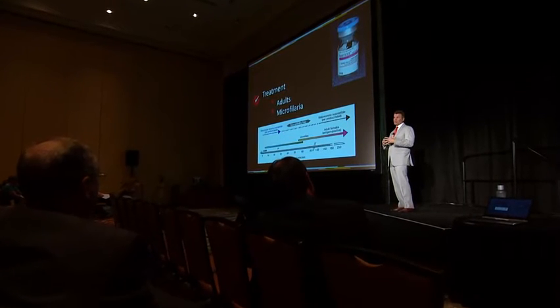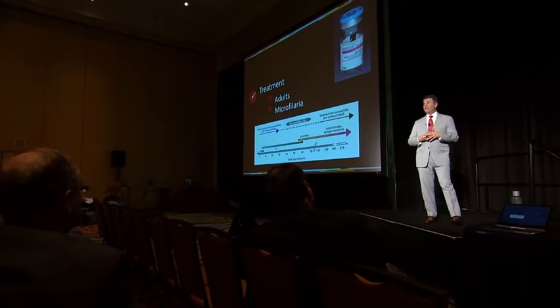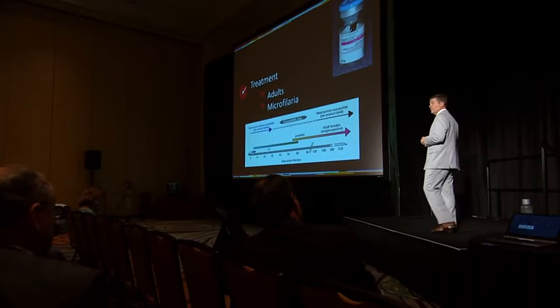Doxycycline itself will not eliminate adult worms, and even in combination with macrocyclic lactones it does not completely eliminate circulating adults. However, the combination may hasten their demise — one study showed as much as 86% of dogs were antigen-negative within about 43 weeks when administered both an ivermectin-containing product and doxycycline. This is much more rapid elimination than seen with macrocyclic lactones alone, indicating an additive effect on adult worm health.